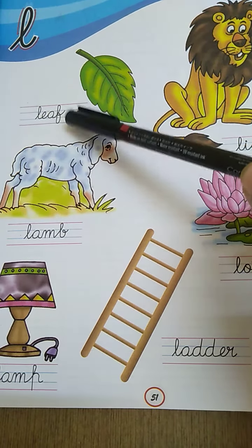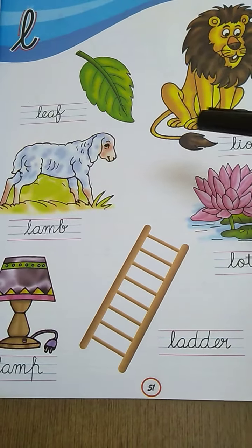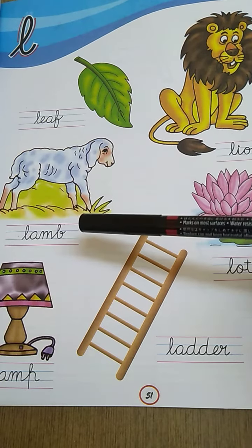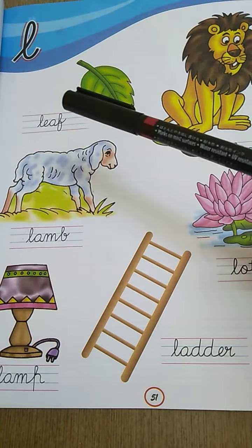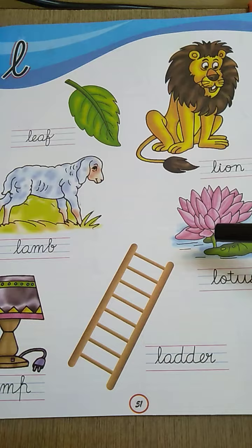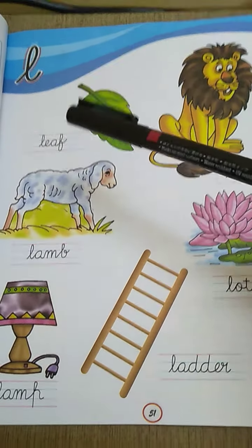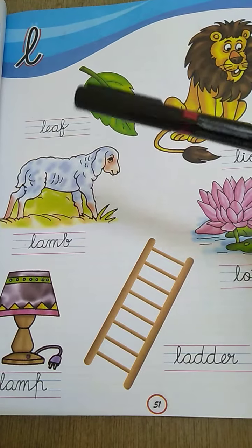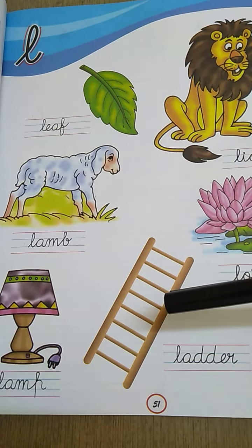L for leaf. L says L. L for lion. L says L. L for lamp. L says L. L for lotus. L says L. L for ladder.